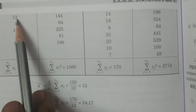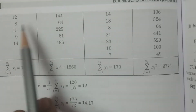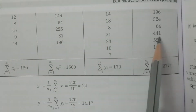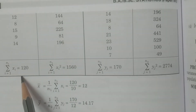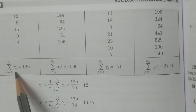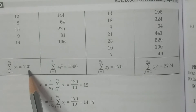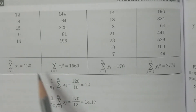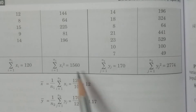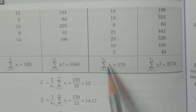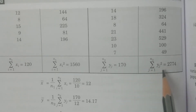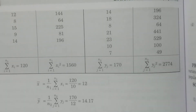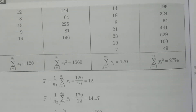The calculated totals are: Σxi = 120, Σxi² = 1560, Σyj = 170, and Σyj² = 20774. For example, xi = 12, xi² = 144; yj = 14, yj² = 196 — and so on for all values in both samples.